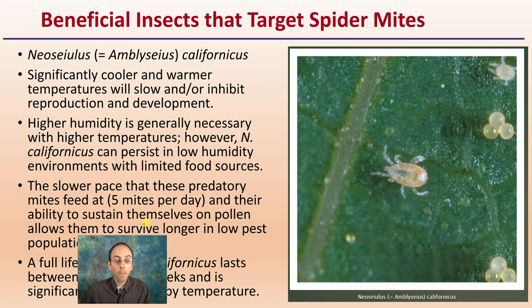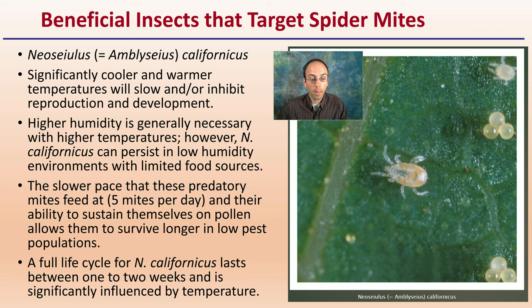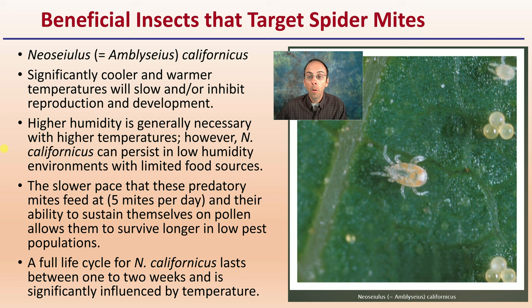The beneficial insect specifically targeting these spider mites is Neoseiulus californicus. Significantly cooler and warmer temperatures will slow or inhibit their development. Higher humidity is generally necessary with higher temperatures; however, californicus can persist in low humidity environments with limited food sources, which makes it a great beneficial insect to choose. These predatory mites feed at a slower pace — about five mites per day — and their ability to sustain themselves on pollen allows them to survive longer at lower pest populations. The full life cycle of californicus can last between one to two weeks and is significantly influenced by temperature.